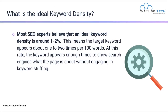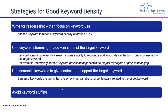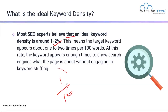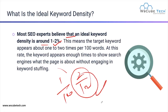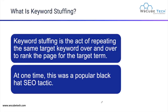Most SEO experts believe that an ideal keyword density is around 1 to 2%. This means the targeted keyword appears one or two times per 100 words. If you use your keyword only once in a 100-word article, that is good; using it twice per 100 words is also good. At this rate, the keyword appears enough times to show search engines what the page is about without engaging in keyword stuffing.